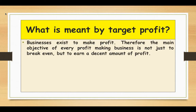Businesses exist to make profit. The main objective of a profit making business is not just to break even but to earn a decent amount of profit. So target profit is a goal for how much money a company wants to make — it is a decision rather than a calculation.